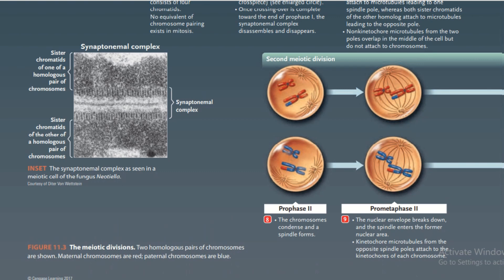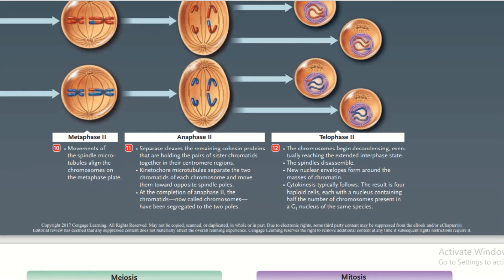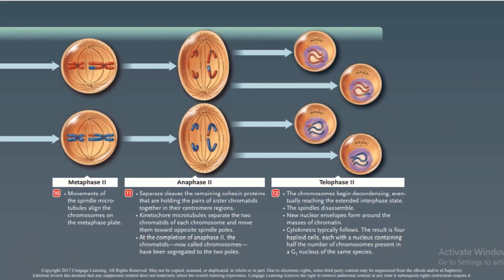In Prophase II, the chromosomes condense and a spindle is formed. In Prometaphase II, the nuclear envelopes break down and the spindle enters the former nuclear area; kinetochore microtubules from opposite spindle poles attach to the kinetochores of each chromosome. In Metaphase II, spindle microtubules align the chromosomes on the metaphase plate. In Anaphase II, separase cleaves the remaining cohesion proteins holding the sister chromatids together at the centromere region, and kinetochore microtubules separate the two chromatids of each chromosome, moving them toward opposite spindle poles.